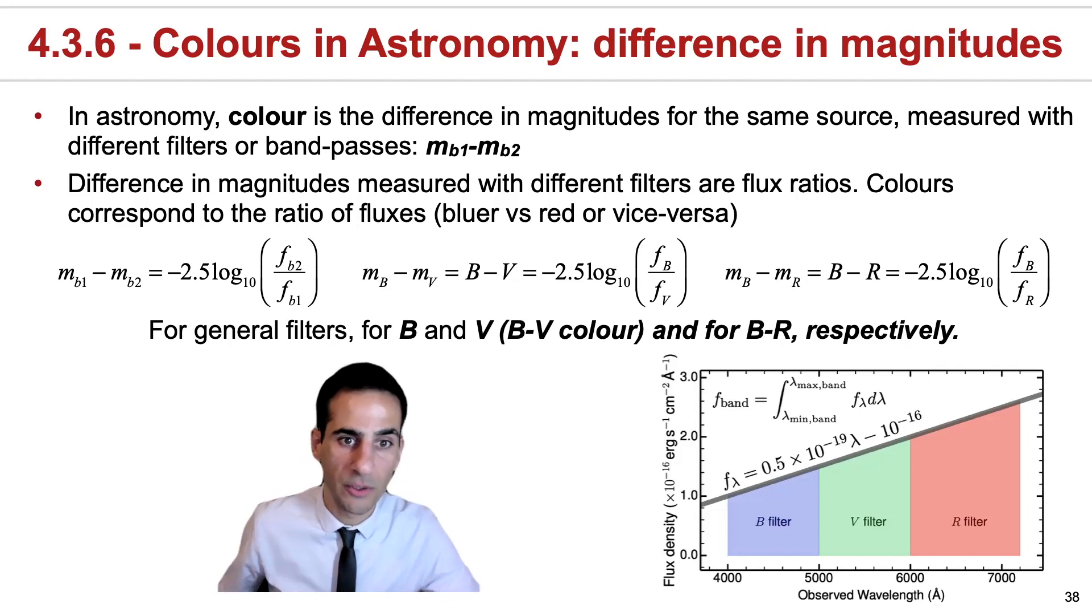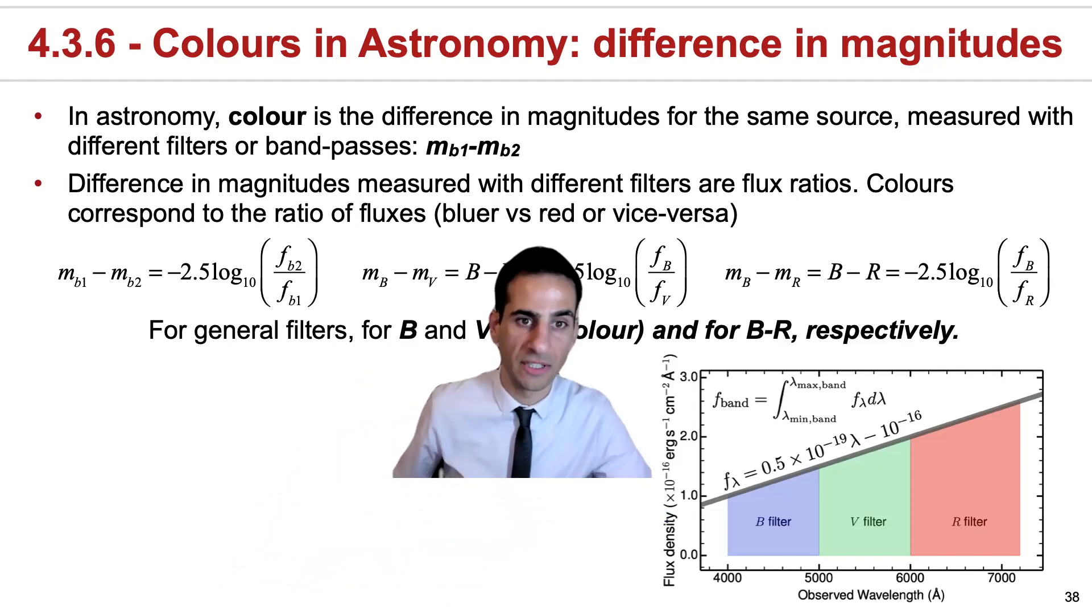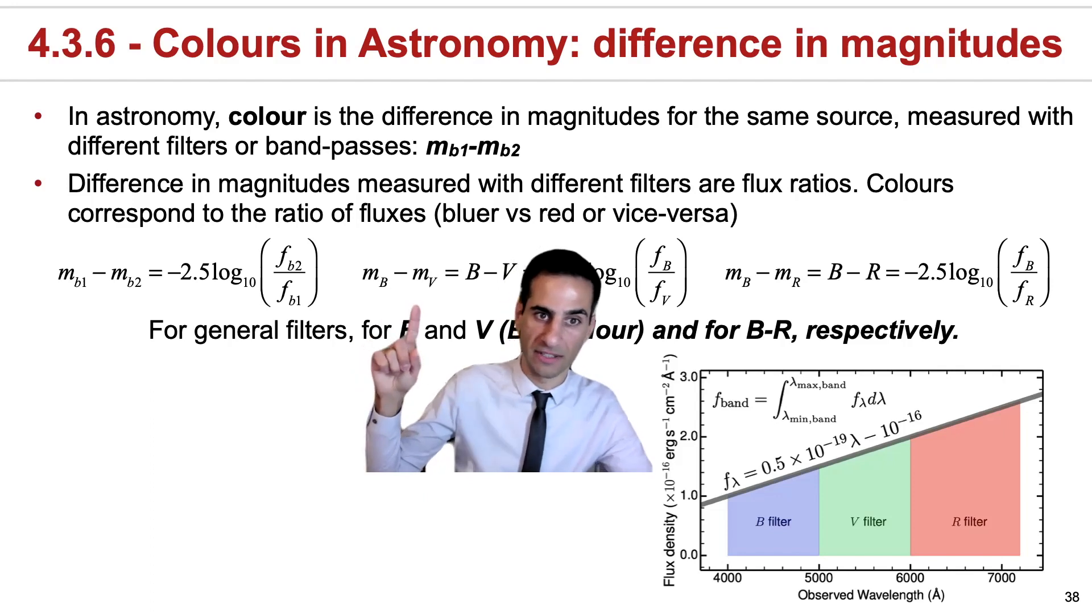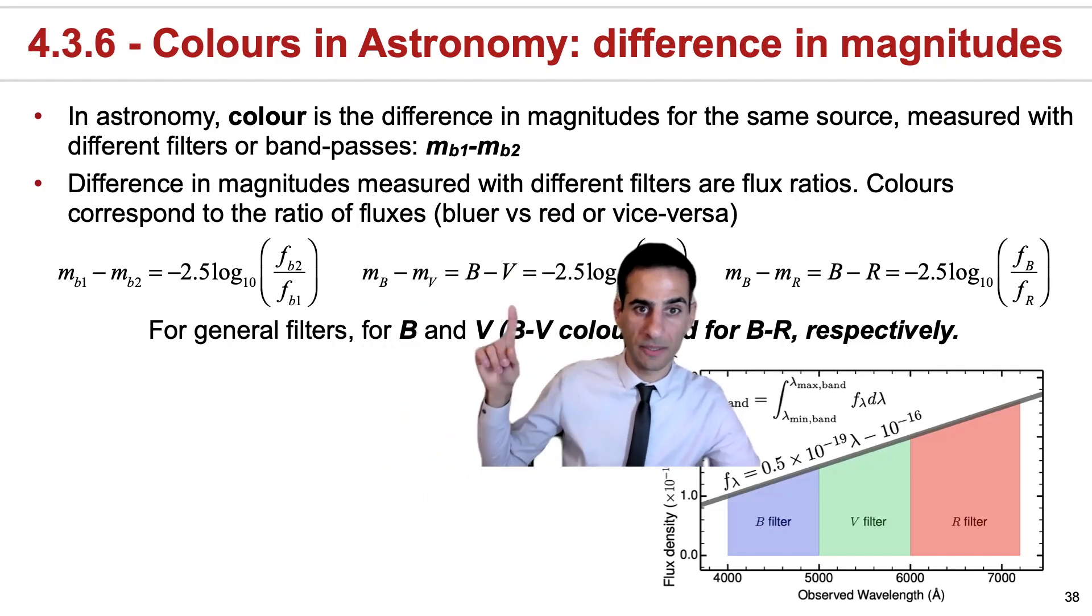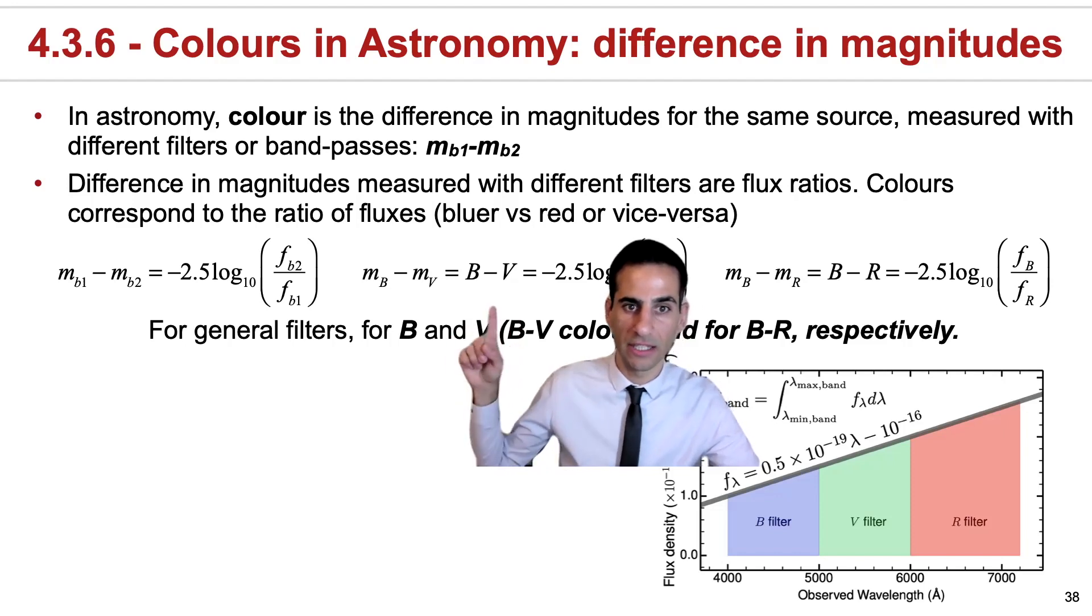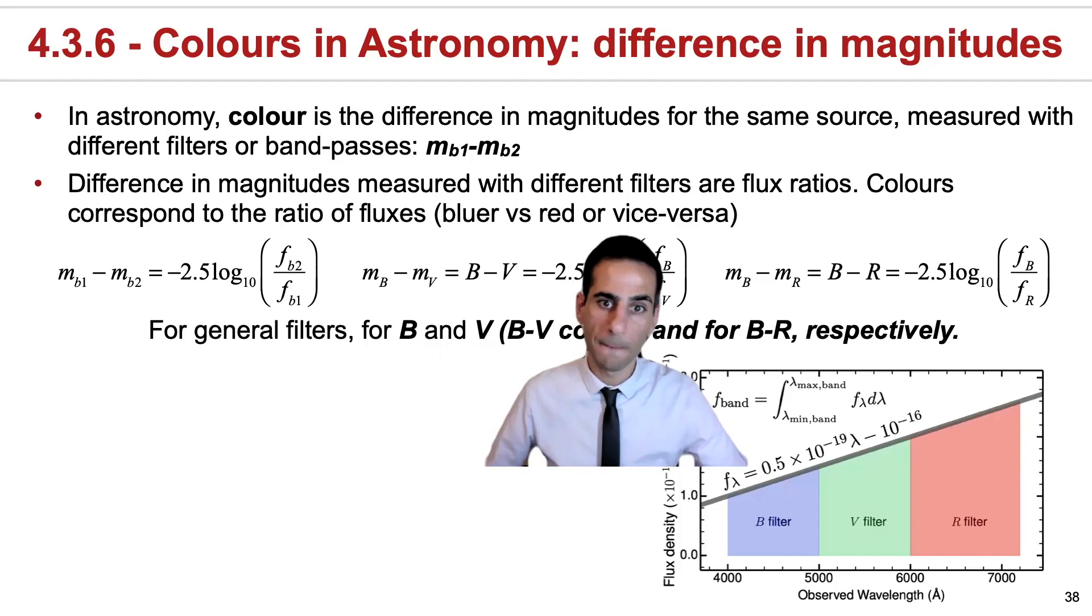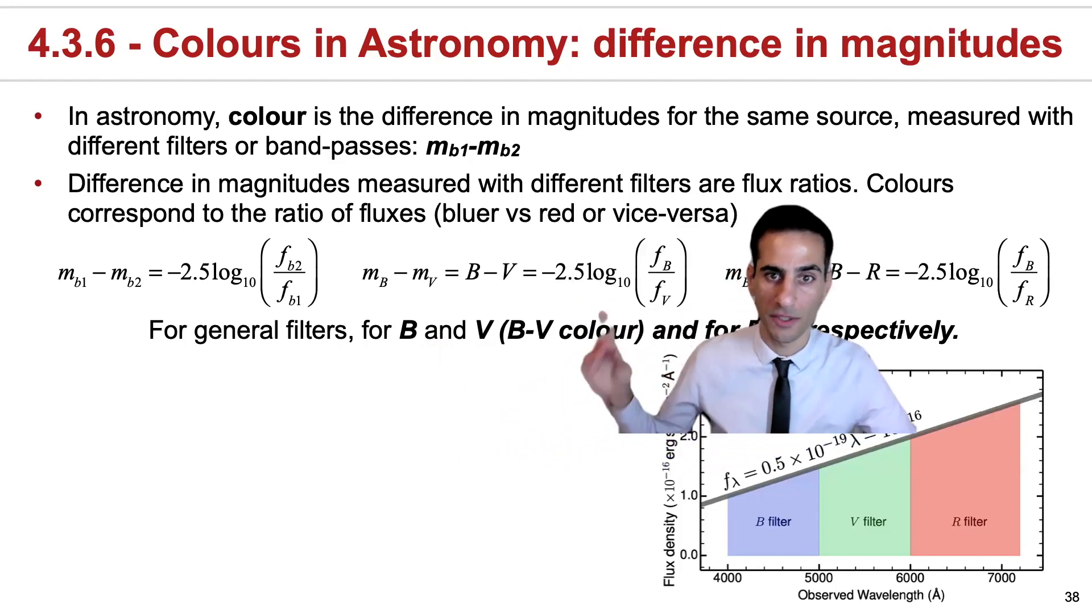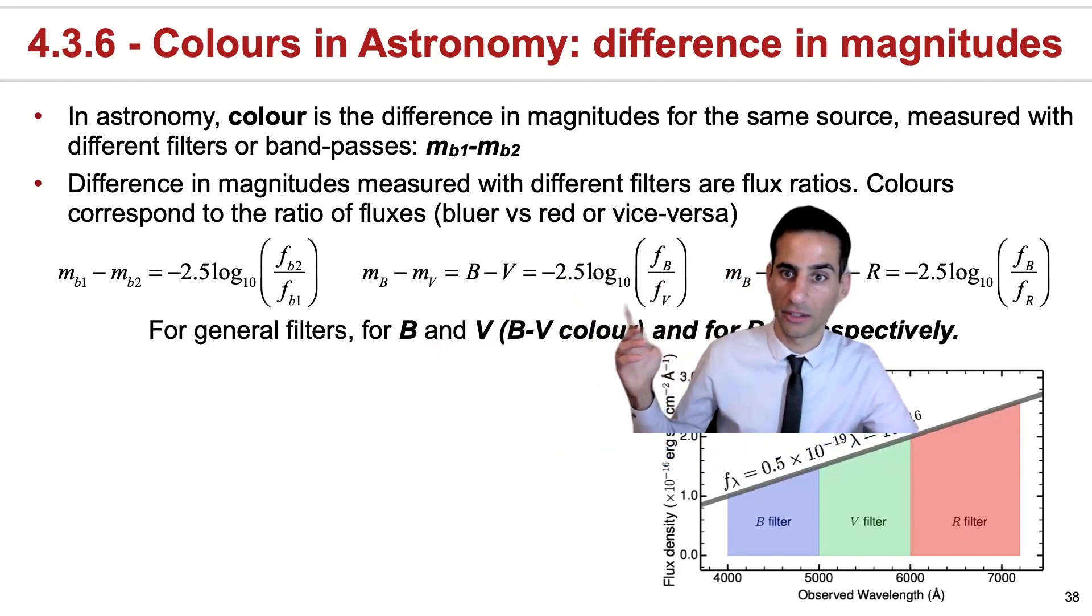In general, the way we write this, apart from using something like the color between B and V, we can write it as MB minus MV, or simply B minus V. So if you're asked to calculate the B minus V color, this is what you're trying to do. If you know the fluxes of that source in the B and V bands, you can calculate this.